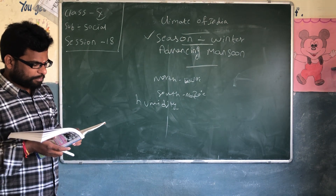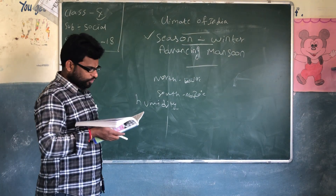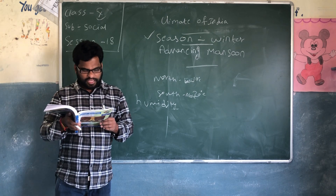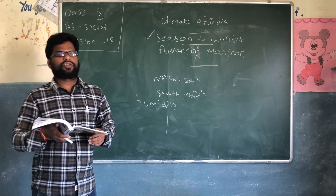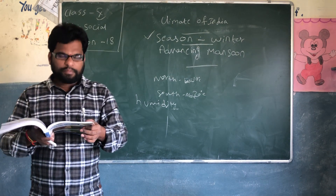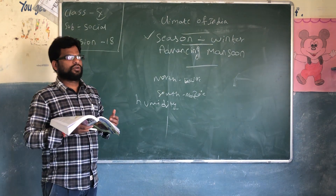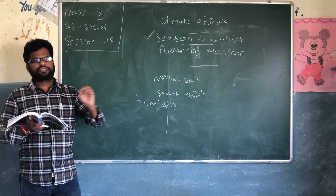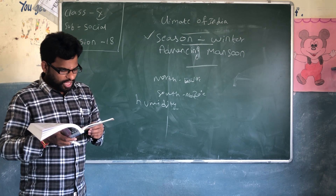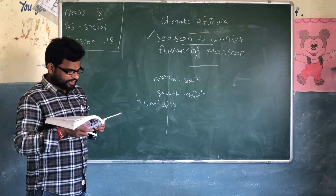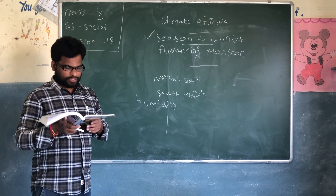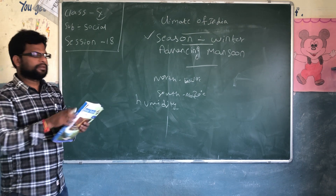Cyclone depressions coming from the Mediterranean Sea, called Western Disturbances, cause low to moderate rainfall over North India. These cyclones from the Mediterranean Sea disturb the region by causing rains. Any time you can get cyclones because of climate changes, and they will disturb northern India.